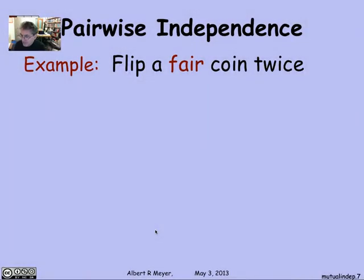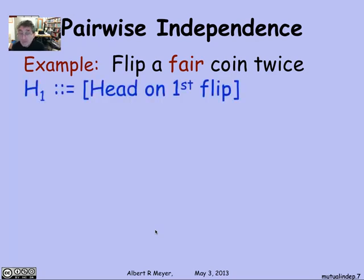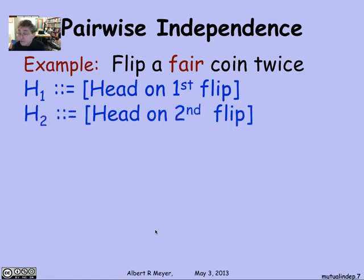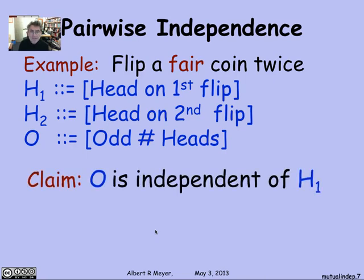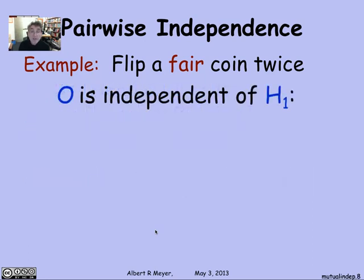Suppose I flip a fair coin twice — so heads and tails are equally likely. Let H1 be the event that a head comes up on the first flip, H2 the event that a head comes up on the second flip, and let O be the event that there were an odd number of heads in the two flips. I claim that O is independent of whether or not there's a head on the first flip. That may seem weird, because O depends on both flips, but let's check it using the official definition.